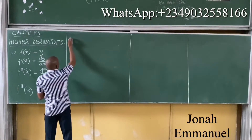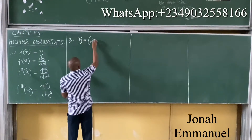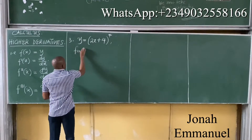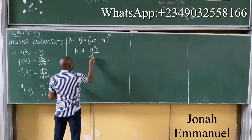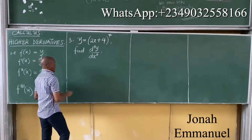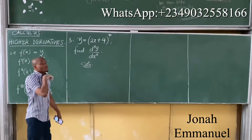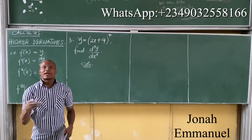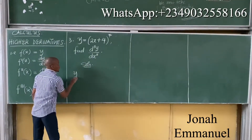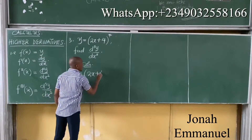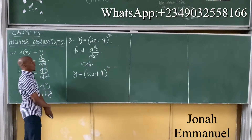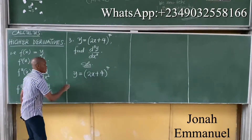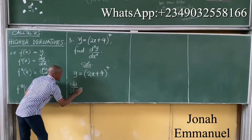Example 3: If y is equal to (2x + 4) to the power 7, find d⁵y over dx⁵. That means I am differentiating five times. So first of all, let me differentiate once to get dy/dx. To differentiate this, I will use the chain rule method.